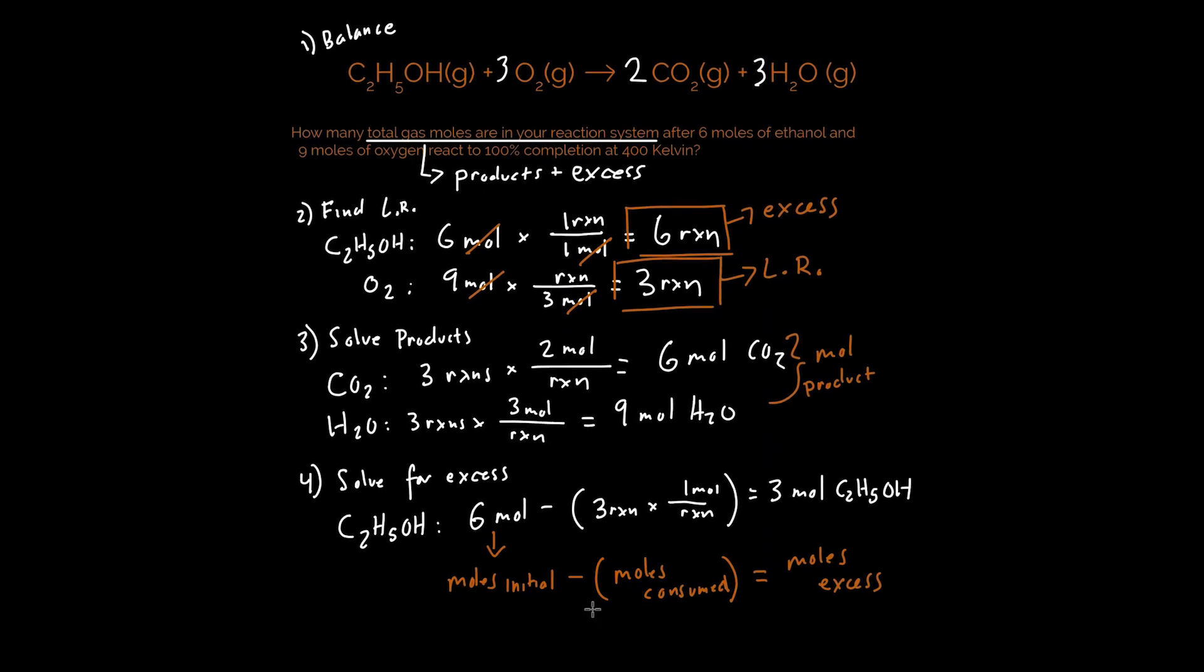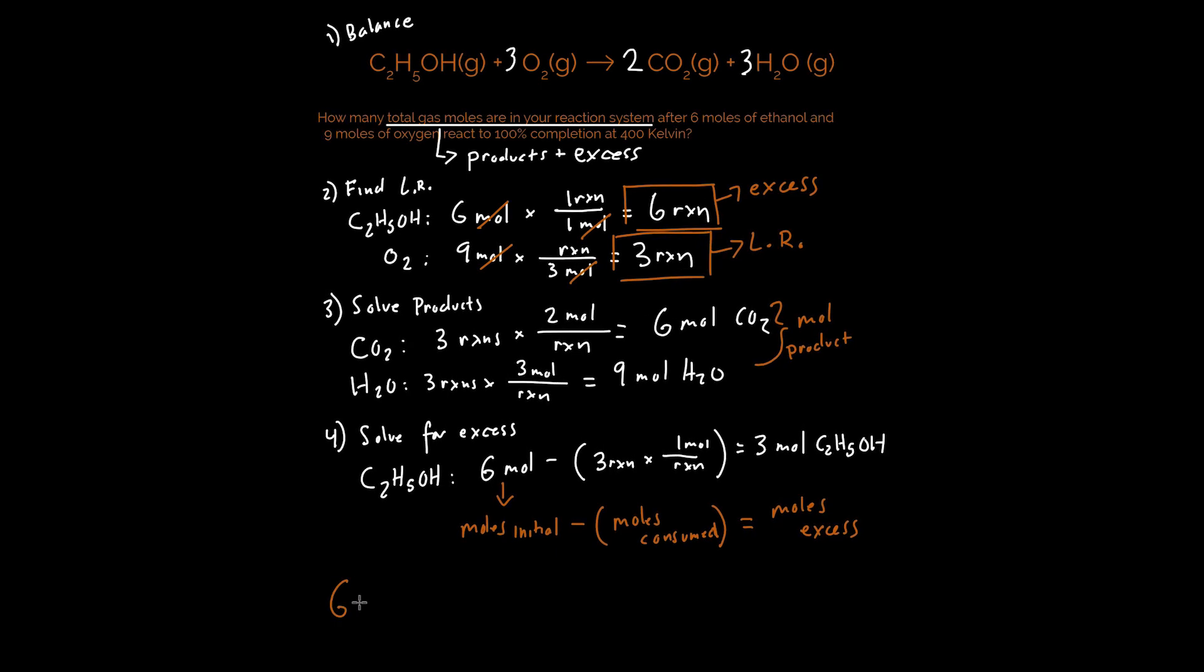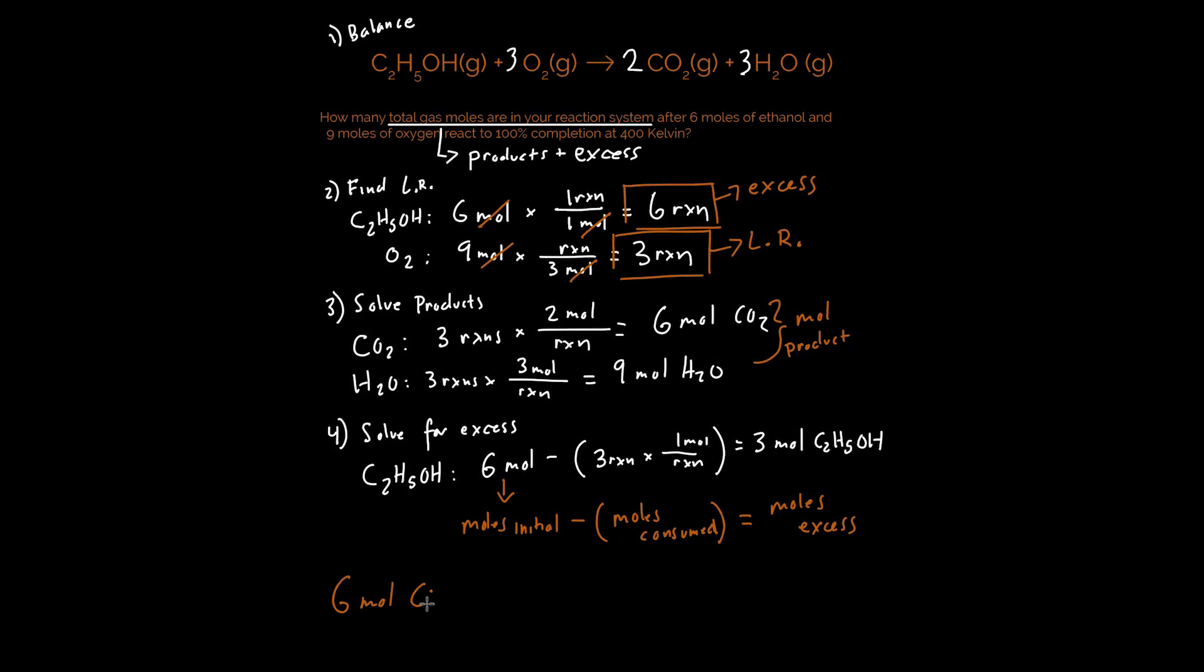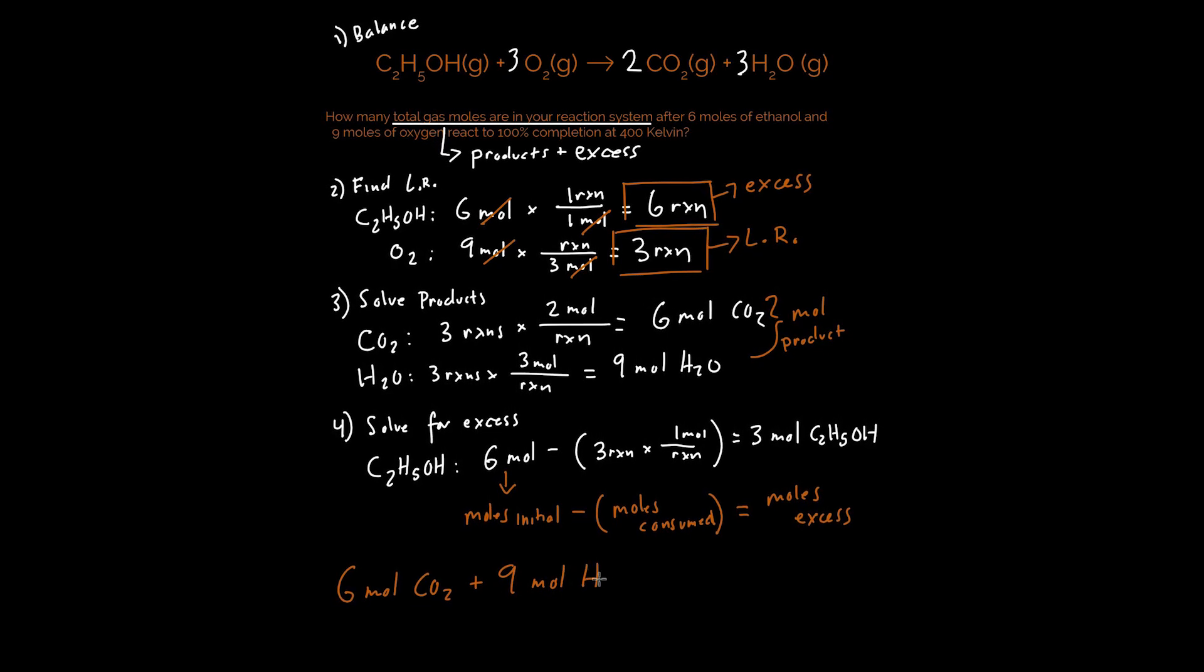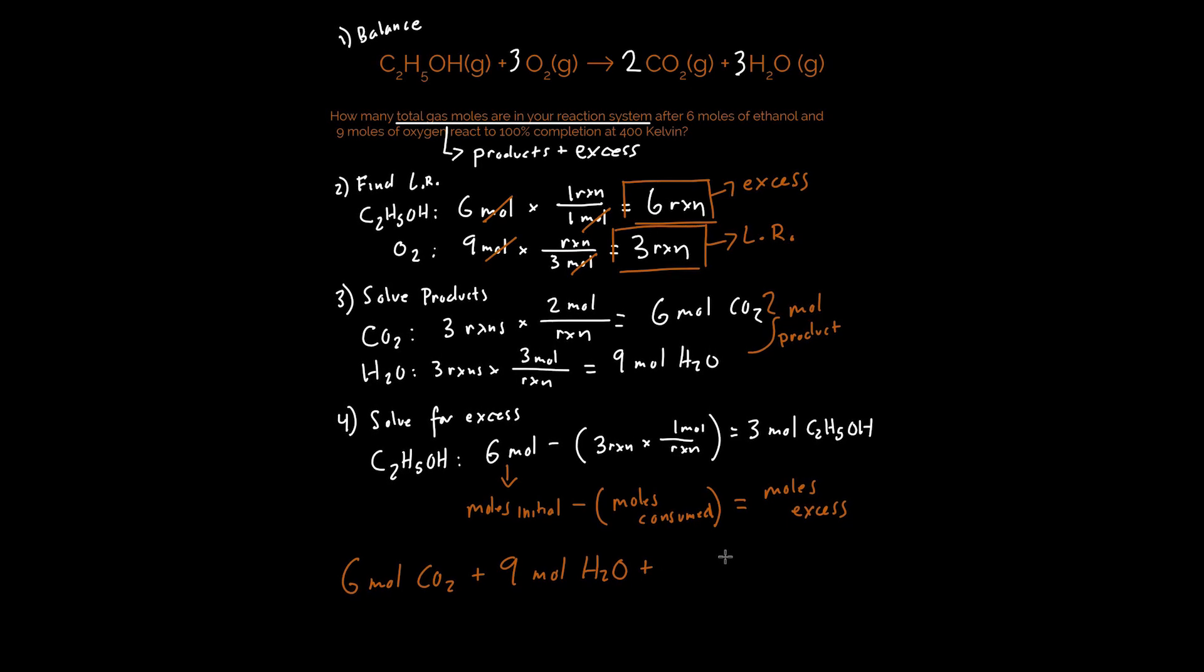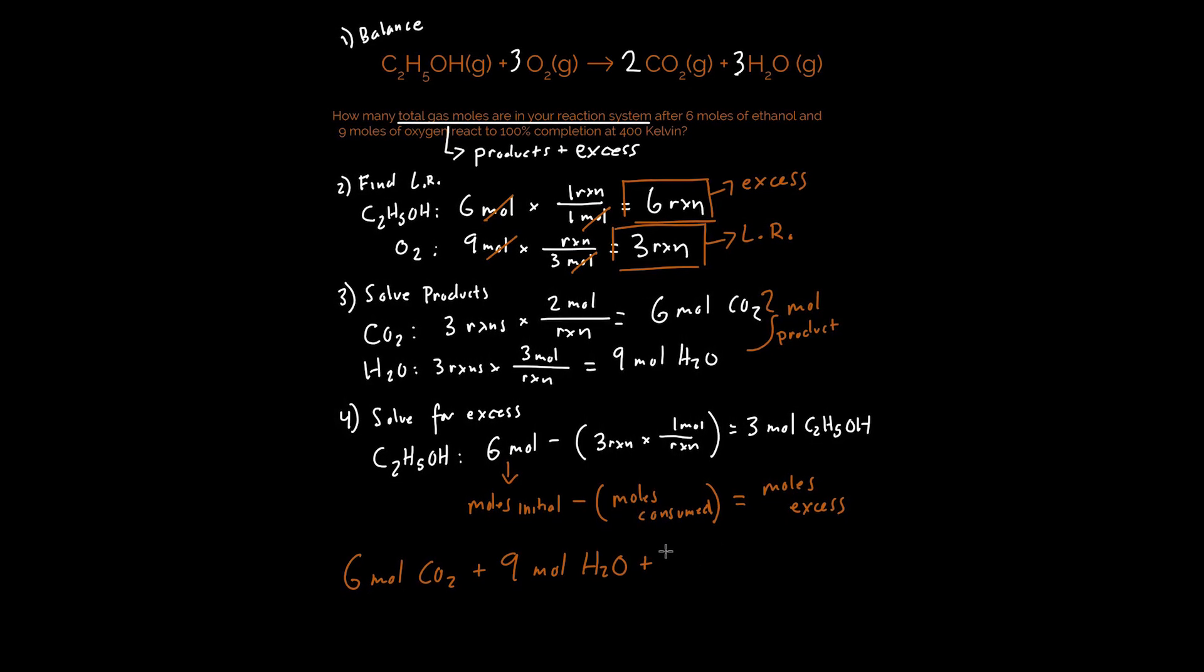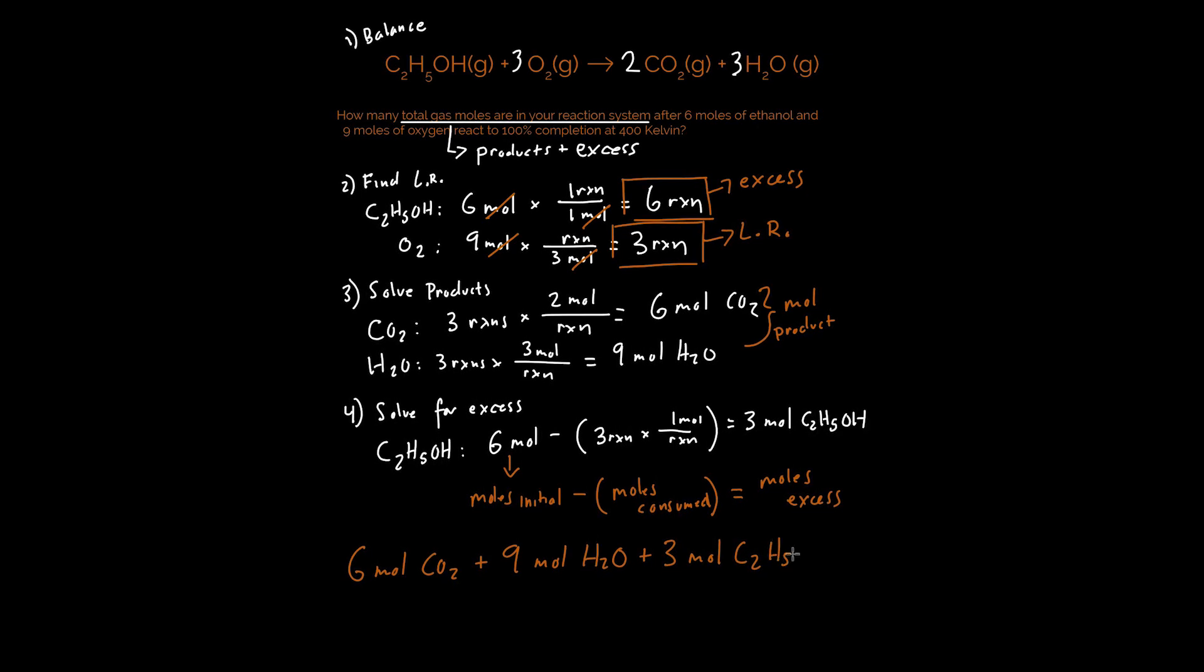Now we can actually solve for our final answer, which is going to be our 6 moles of CO2 plus our 9 moles of that steam. And lastly, we're going to include the very important amount in excess, which is 3 moles of our ethanol. That's going to give us a final answer equal to 18 moles of gas.